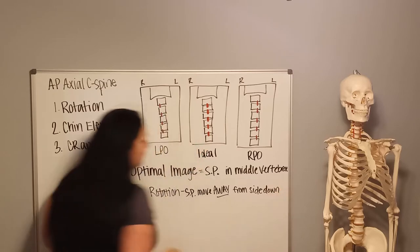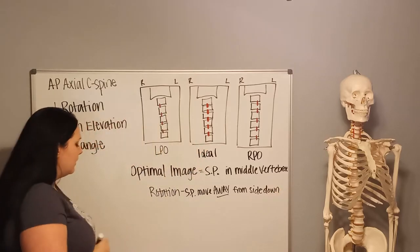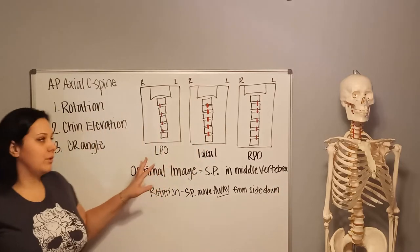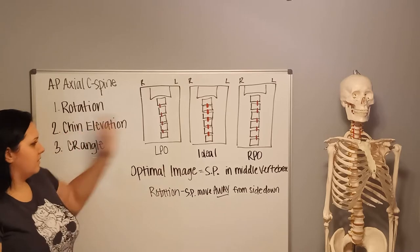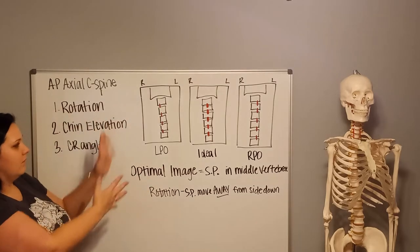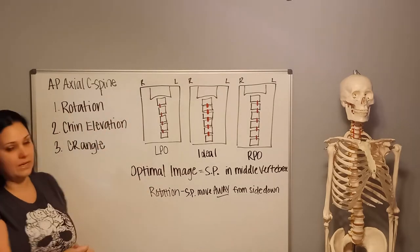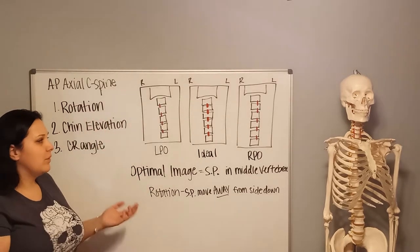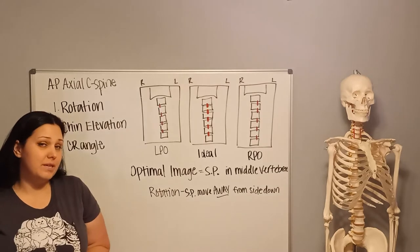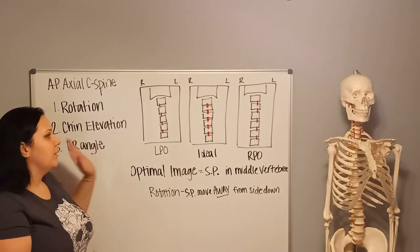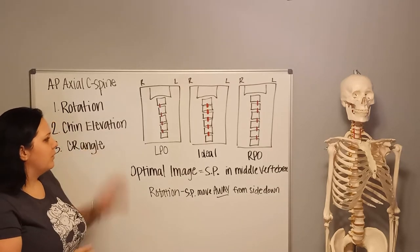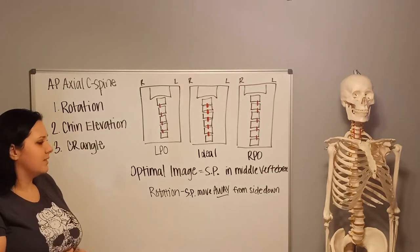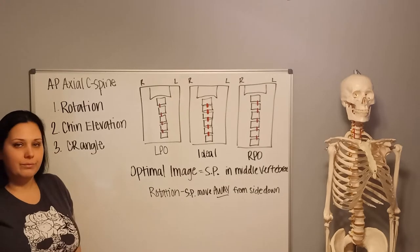To summarize rotation: in an optimal image, you want the spinous processes in the middle of the vertebrae. With rotation, the spinous processes move away from the side that's down — meaning the side closer to the image receptor. I'm going to pause the video to set up for the next piece, but I'd rewatch this if it's not making sense.